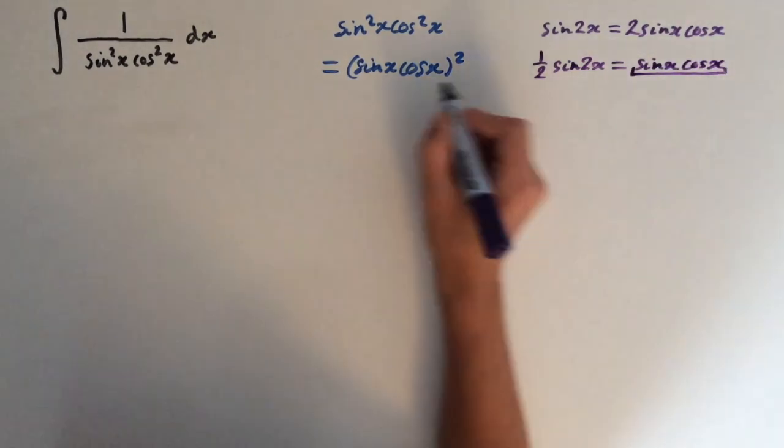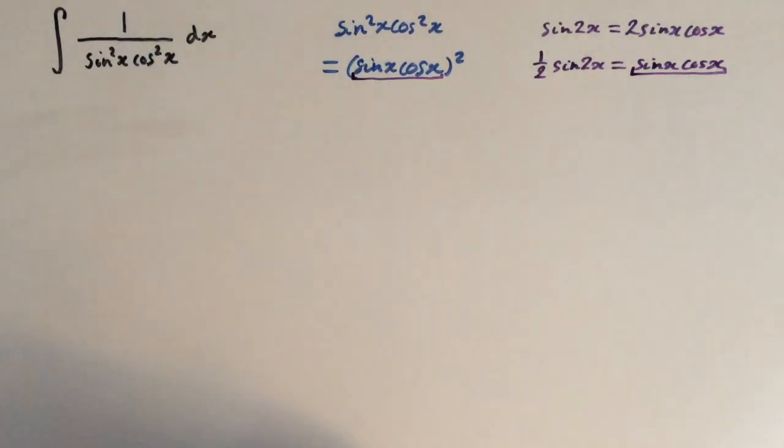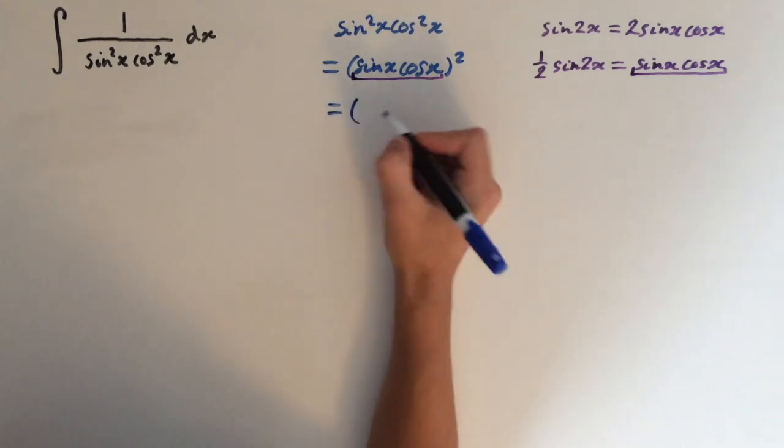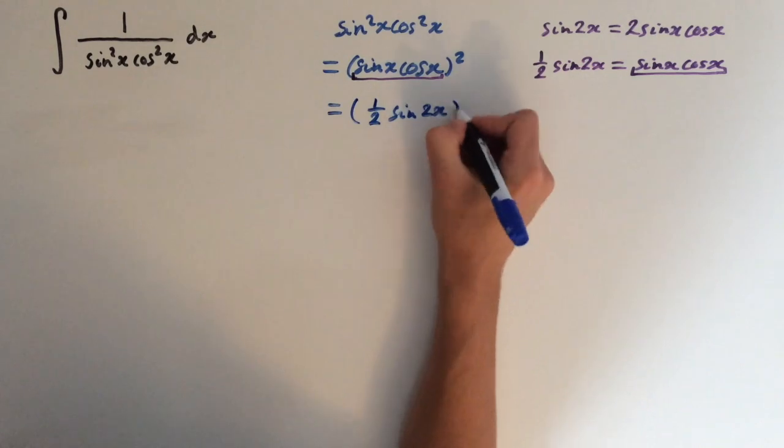So you can see that this equals this inside the bracket. So we can just substitute the left hand side. So this is going to look like 1 half sine 2x all squared.